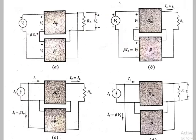Taking you back to this diagram which we studied in the previous tutorial. Please understand that RIF and ROF are the effective input resistance and output resistance after the feedback has been applied. In these circuits you would not be able to see them directly, so let's draw them first.